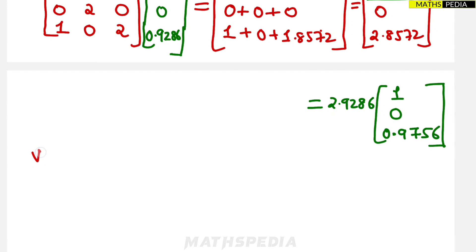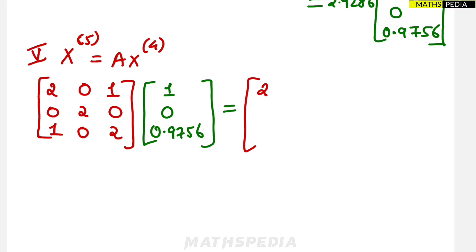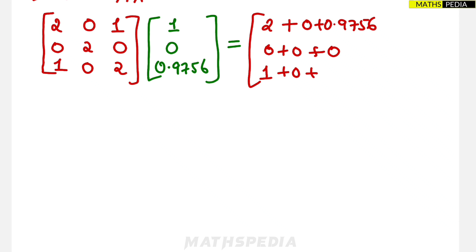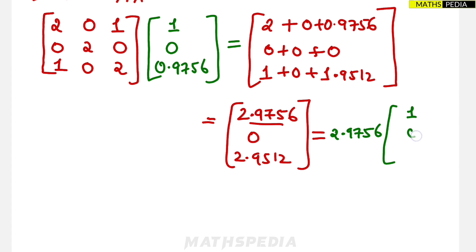Fourth iteration: x^4 = A × x^3, using [1, 0, 0.9286]. First element: 2×1 + 0.9286 = 2.9286; second: 0; third: 1 + 2×0.9286 = 2.8572. Result is [2.9286, 0, 2.8572]. Taking 2.9286 outside, λ^4 = 2.9286 and the vector becomes [1, 0, 0.9756].